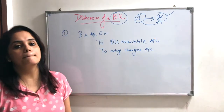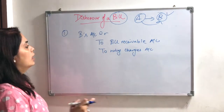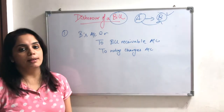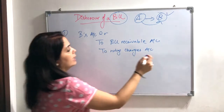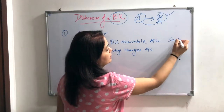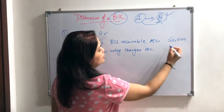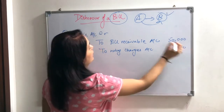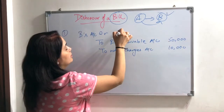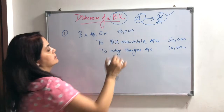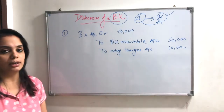So B is responsible. Now, the dishonored bill is Rs. 50,000, and noting charges are Rs. 10,000. So the entire entry totals Rs. 60,000 — B's account debited to Bills Receivable for Rs. 50,000 plus noting charges of Rs. 10,000, making a total of Rs. 60,000.